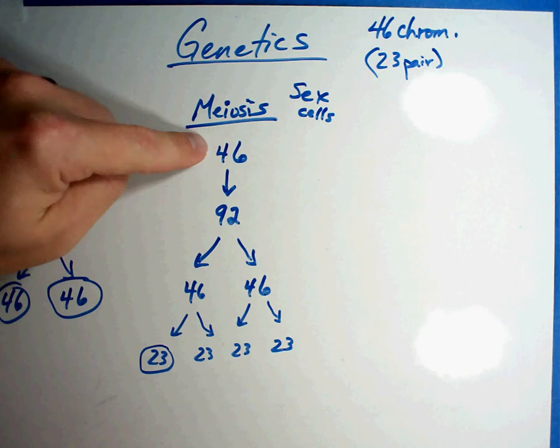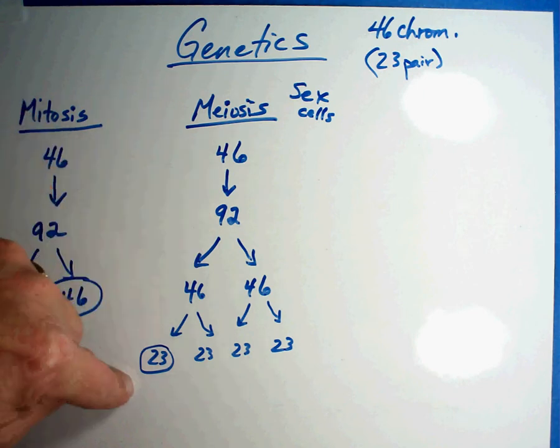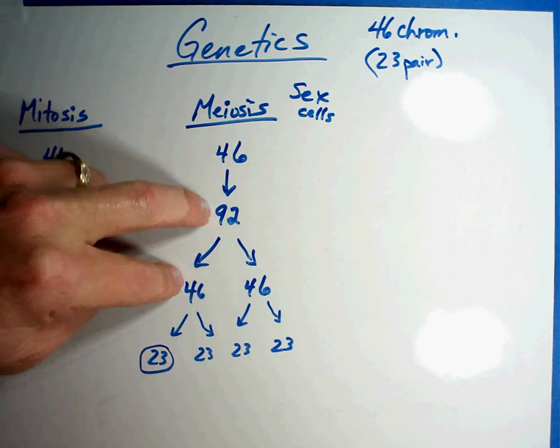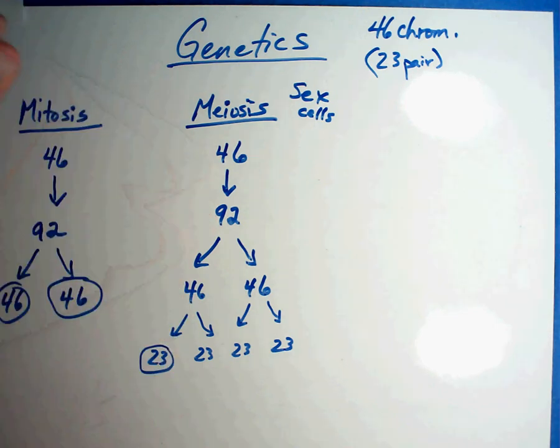In the testes of a male, the normal cells in there will double, duplicate themselves. Then they'll split and then they'll split again. Sometimes this is called mitosis 1 and then mitosis 2. It does it twice, so the process looks like it's happening twice. What happens is for one cell, you end up getting four sperm cells.